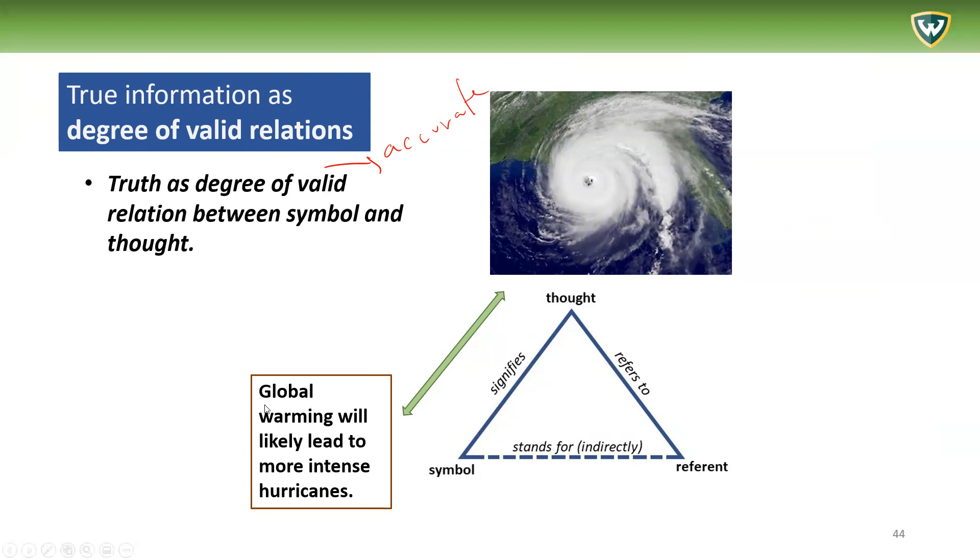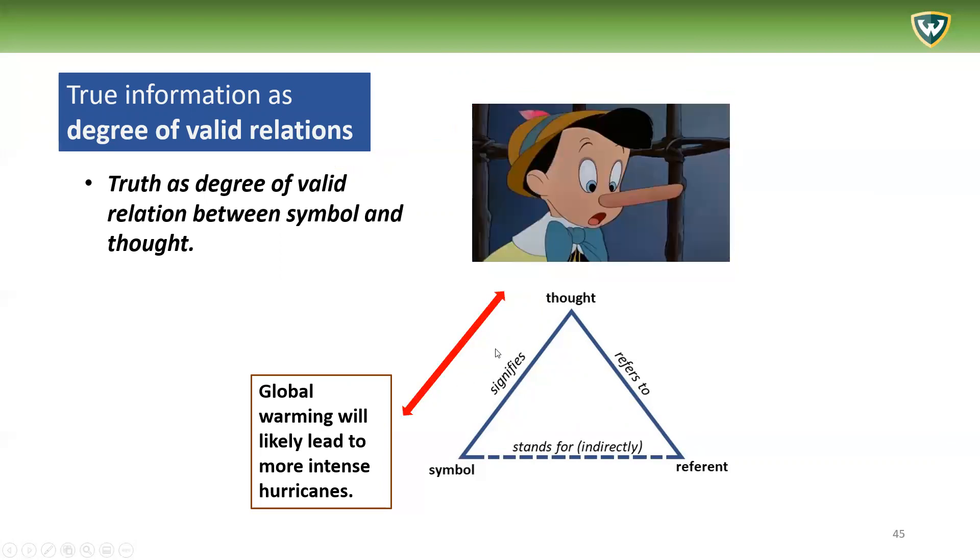So let's take these symbols here: 'Global warming will likely lead to more intense hurricanes.' And you can imagine more intense hurricanes. And then we have a true relation between sign and the mental model. Now, this may not always be true.